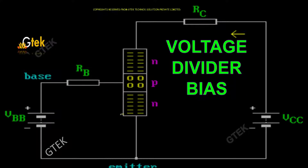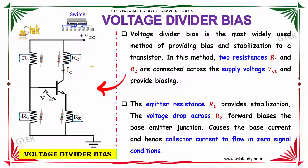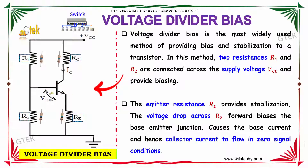The voltage divider bias is the most widely used method of providing bias and stabilization for a transistor. In this method, two resistances R1 and R2 are connected across the supply voltage VCC to provide biasing. The emitter resistance RE provides stabilization. The voltage drop across R2 forward biases the base-emitter junction, causing the base current and hence the collector current to flow under zero signal conditions.